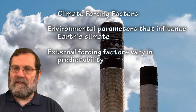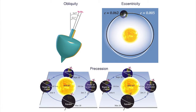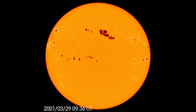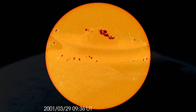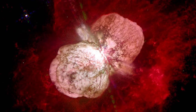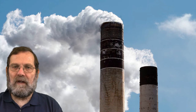As presented in previous segments, climate forcing factors are environmental parameters that influence Earth's climate. External forcing factors run the gamut in terms of predictability. The orbital variations of obliquity, eccentricity, and precession follow patterns set by the law of gravity, and therefore should continue indefinitely. Sunspot numbers oscillate with an 11-year period. In contrast, external factors such as comets crashing into Earth and supernovas collapsing somewhere in the cosmic neighborhood seem to be random occurrences and therefore difficult to incorporate into global climate models.